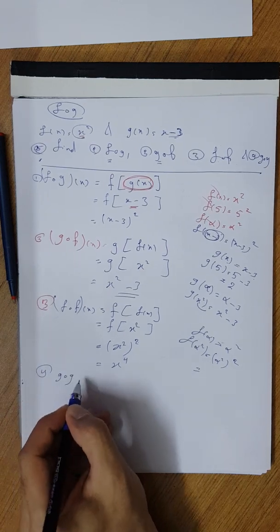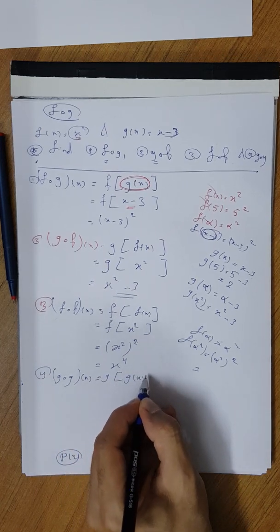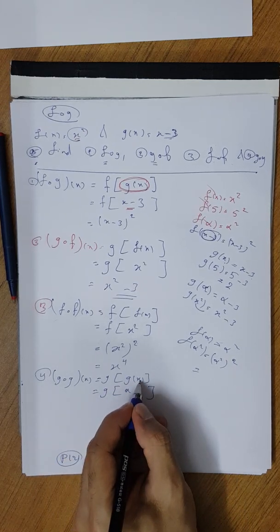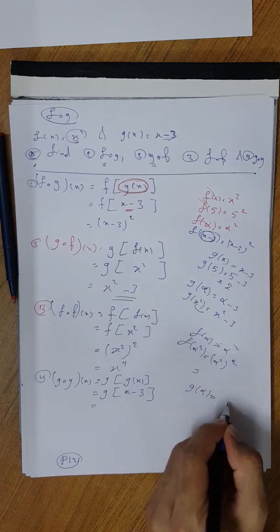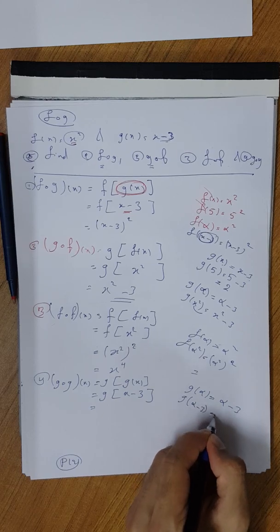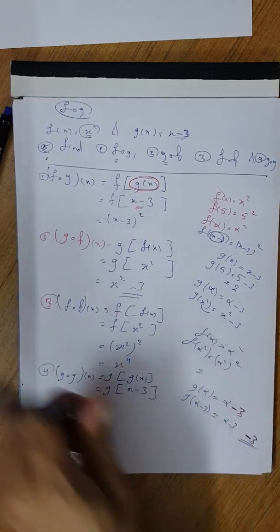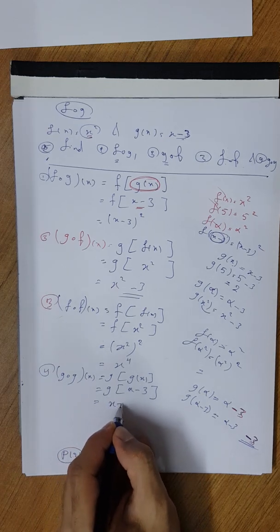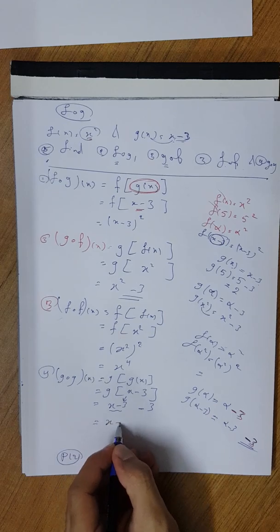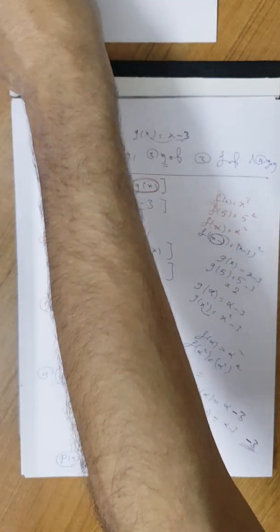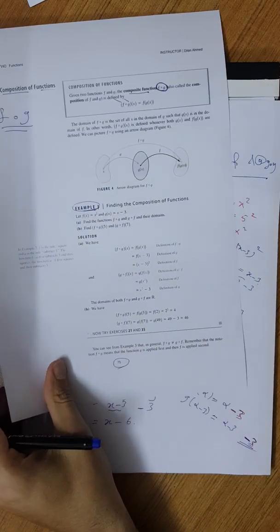For number 4, g circle g of x, by the same method I write g of closed bracket g of x. Inside the closed bracket, g of x equals x minus 3. Now g of alpha is alpha minus 3, so g of x minus 3 gives x minus 3, itself minus 3. That equals x minus 6. That is your Example 3, page 75 in your lecture note.